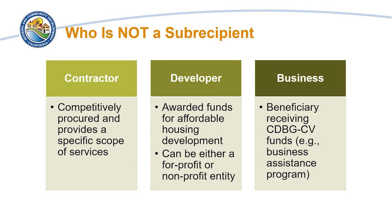Contractors, developers, and businesses cannot be subrecipients. A contractor must be competitively procured and provides a specific scope of services. A developer is awarded funds to construct an affordable housing development, for example, through a business assistance program.